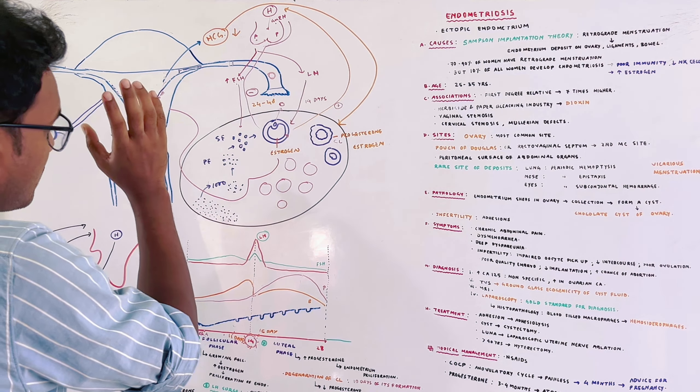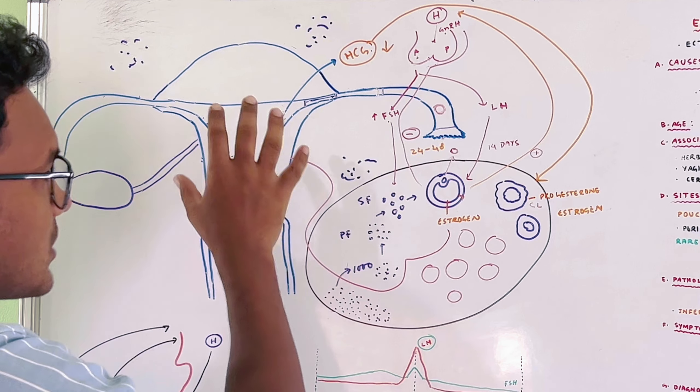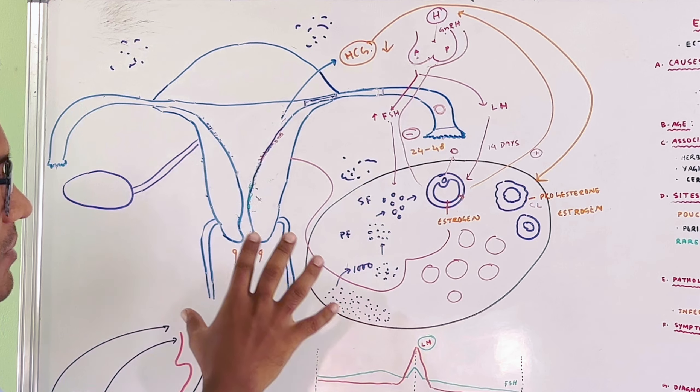The menstrual cycle starts at the next stage. The body's estrogen and progesterone levels — even estrogen levels — cause the uterus to have a lot of endometrium proliferation. The endometrium layer will be scattered and this layer starts to proliferate.